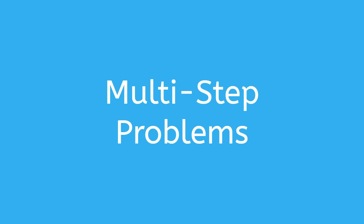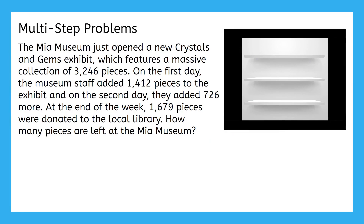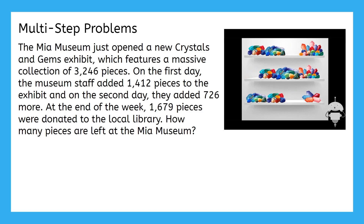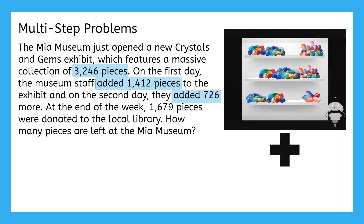For our next problem, we'll need to pay attention to the order of events to help us solve. The MIA Museum just opened a new crystals and gems exhibit featuring a massive collection of 3,246 pieces. On the first day, the museum staff added 1,412 pieces to the exhibit, and on the second day they added 726 more. At the end of the week, 1,679 pieces were donated to the local library. How many pieces are left at the MIA Museum? They start with 3,246, then add 1,412, then add 726 more — that's addition first. It switches at the end when they donated pieces, so let's focus on the addition part first.